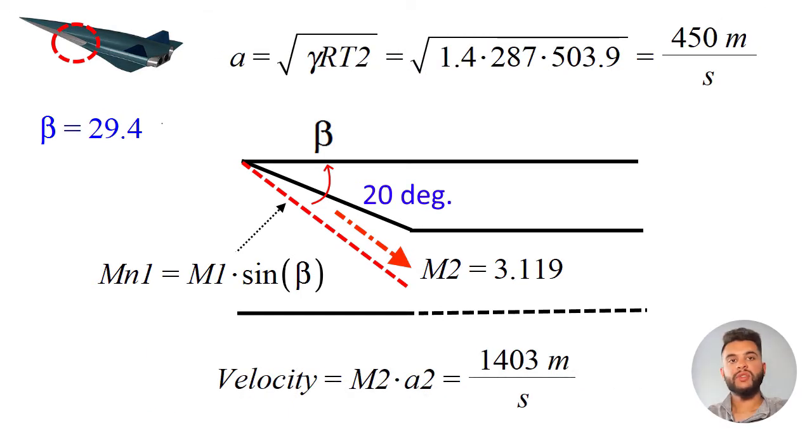Also you can find the fluid velocity. You do a2 equals square root of gamma r t2 because now you have the temperature beyond the shock so you simply plug that in and you get v2 as the value shown.